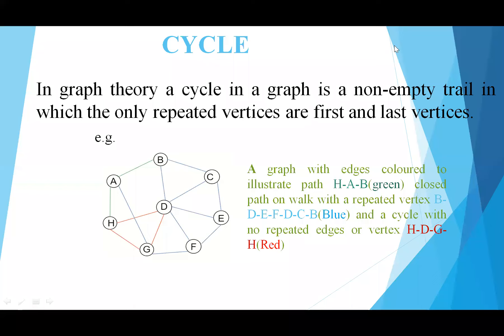In graph theory, a cycle in a graph is a non-empty trail in which the only repeated vertices are the first and last vertices.